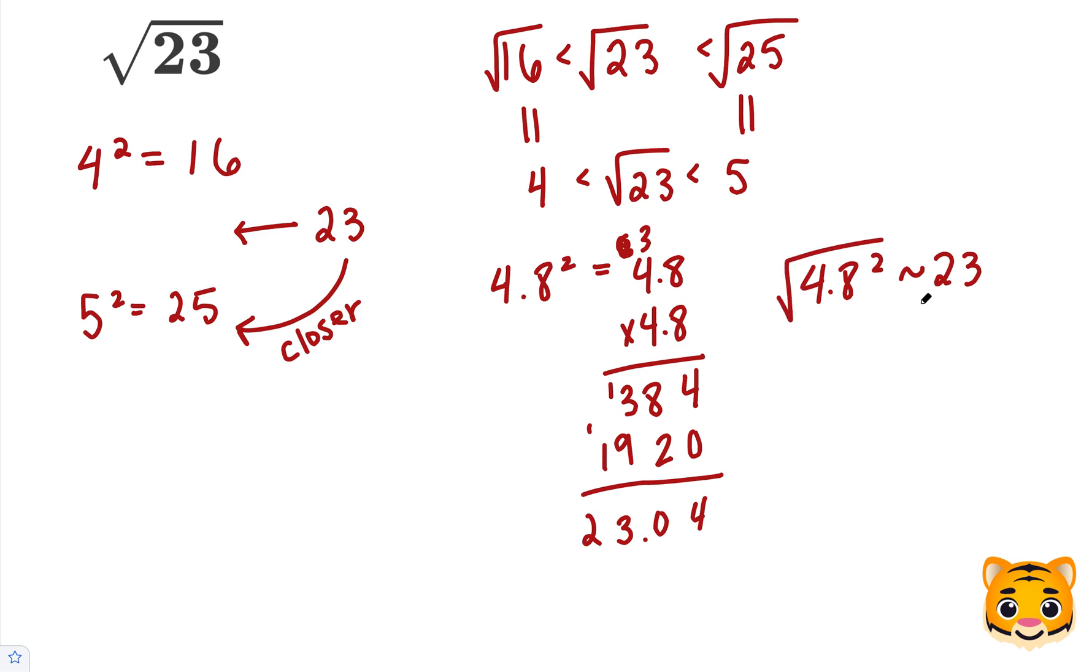Now if we take the square root of both of these values, the square root on the 4.8 squared cancels out along with the squared. So we get 4.8 is approximately equal to root 23, meaning the square root of 23 gives us about 4.8 if we're rounding to the nearest tenths place decimal.